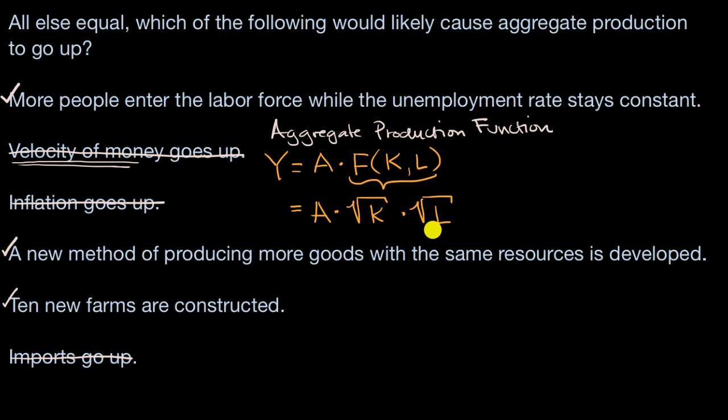So big picture, it's pretty intuitive that if you hold everything else equal and if you increase the factors of production, well then that would likely cause your aggregate production to go up. But economists like to describe things mathematically, and that's what's going on in something like an aggregate production function.